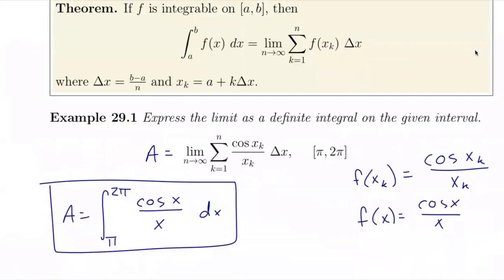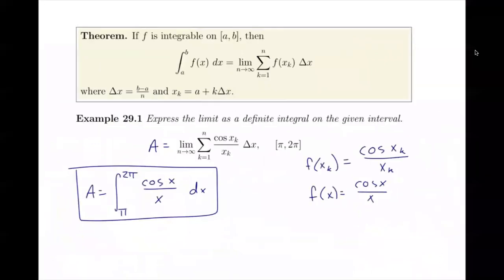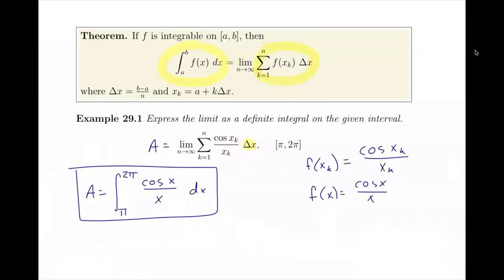Those are all the pieces we really need. The difficulty is evaluating these limits. This example actually goes backwards — we're not asked to evaluate the limit, but to express the limit as a definite integral on a given interval. The area is given by the limit as n goes to infinity of the sum from k equals 1 to n of cosine of x_k over x_k times delta x, on the interval pi to 2 pi. Delta x is built based on pi to 2 pi.